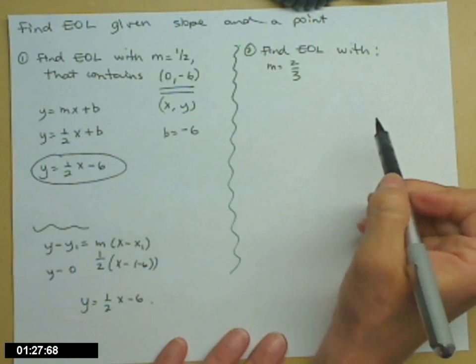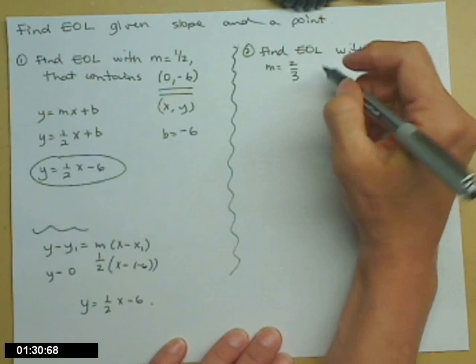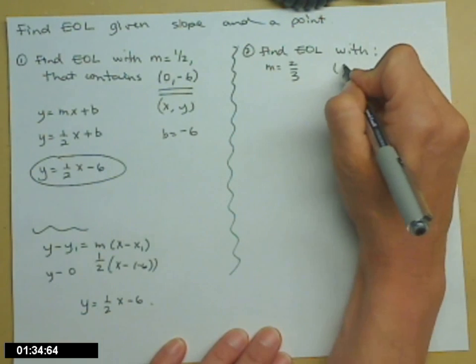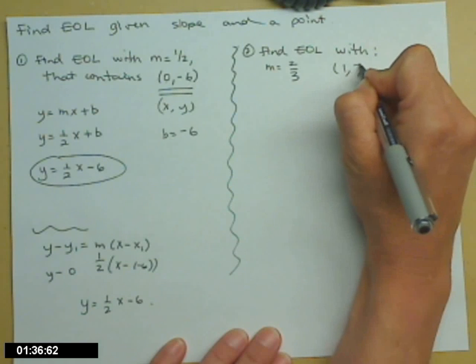Other example: find the equation of the line with a slope of 2/3 that goes through the point (1, 5).